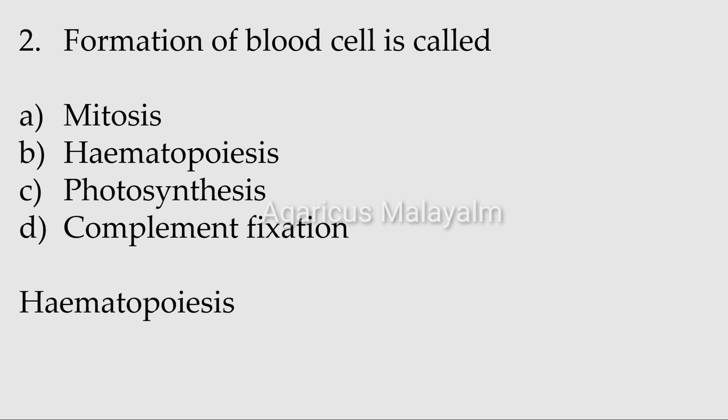Correct answer: Option B, Hematopoiesis. Each blood cell comes from common cells. The common cells process is called Hematopoiesis.